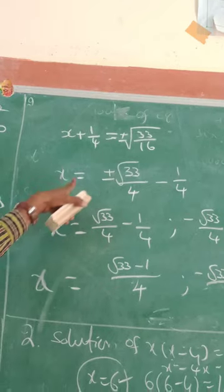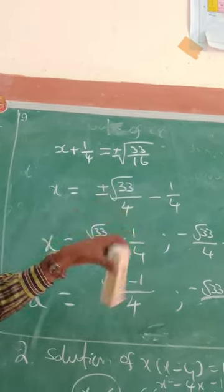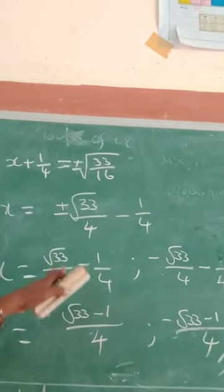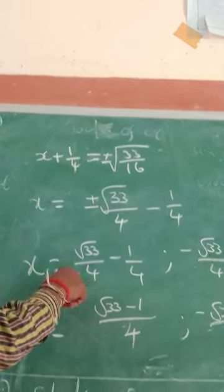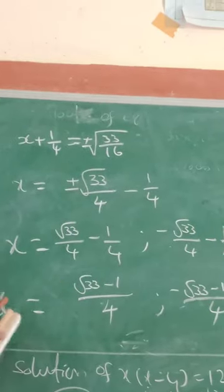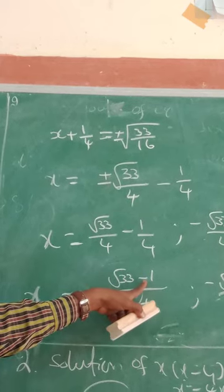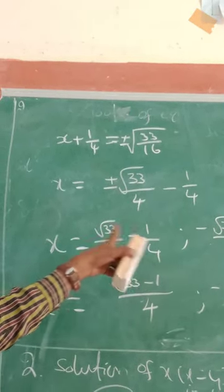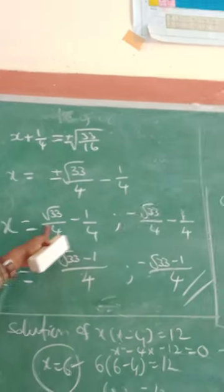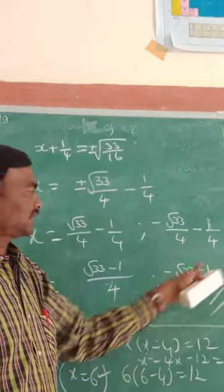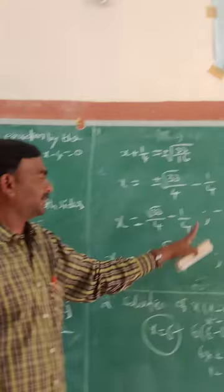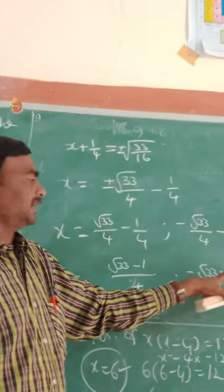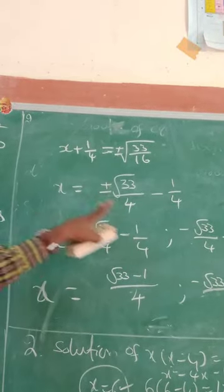Taking the square root of both sides: x + 1/4 = ±√(33/16) = ±√33/4. So x = -1/4 ± √33/4. That gives us two roots: x = (√33 - 1)/4 and x = (-√33 - 1)/4. These are the roots obtained by the completing the square formula.